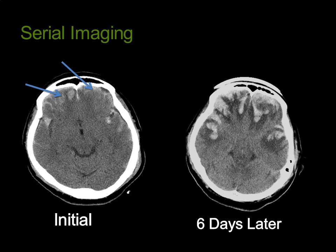Serial imaging assessment is important after head trauma due to the temporal evolution of intracranial injuries. The image on the left is the initial CT scan, showing several small intra-axial contusions bilaterally as well as acute subarachnoid hemorrhage. Six days later, there was dramatic increase in the hemorrhagic component of the bifrontal and bitemporal contusions, with corresponding edema and mass effect, likely with concomitant increase in ICP.